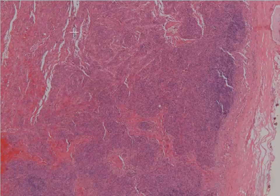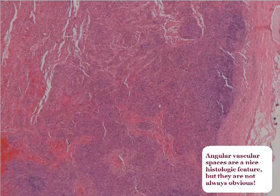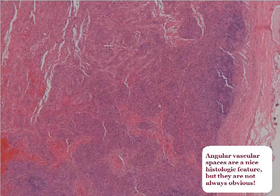Over on the right of this image, you'll actually see what's left of the lymph node. Here's the tumor on the left, and here's the capsule of the lymph node. You can see that there are these angular vascular spaces that compose this tumor.